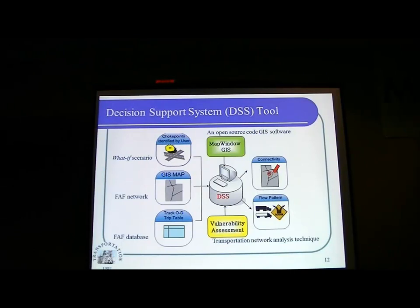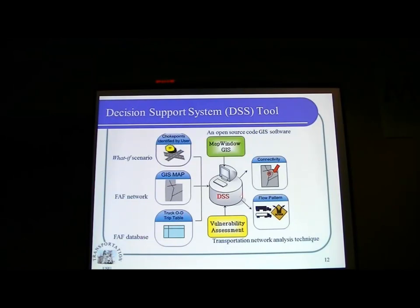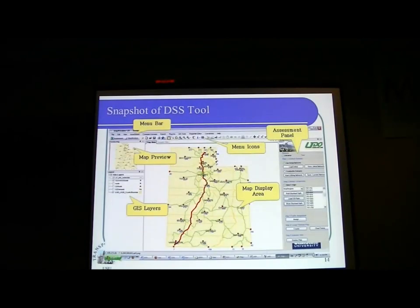This is the framework of the decision support system. On the right-hand side, you can see three elements that must be input into the system. First, we generate what-if scenarios — for example, if this bridge fails, what happens? Second, we need the GIS map, which represents the transportation network. Third, we need the truck OD trip table, which is the demand. These three elements are essential inputs. MapWindow is the tool that allows decision makers to visualize the analysis results, using transportation network analysis techniques. The output includes connectivity and freight flow patterns.